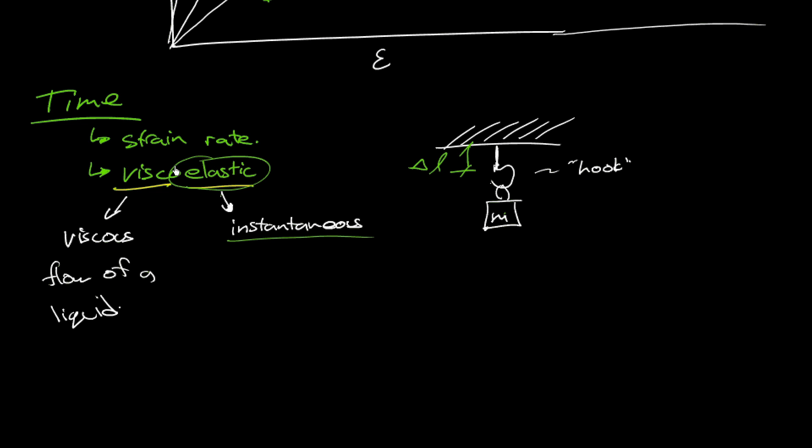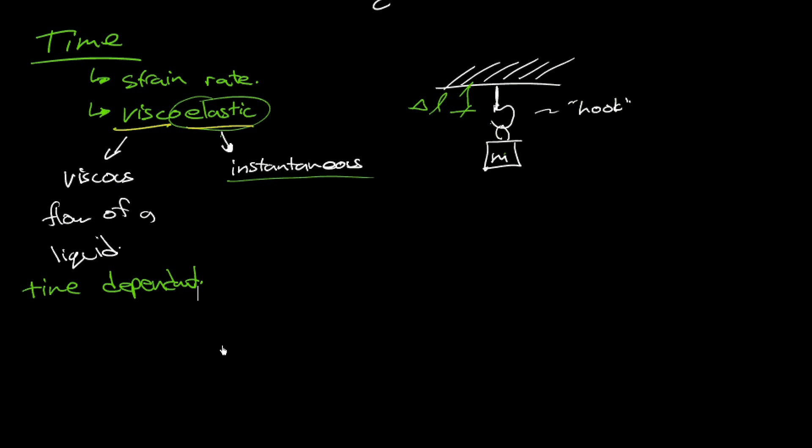And so elastic deformation is the instantaneous or time-independent component of deformation. So polymers have both a time-dependent and an instantaneous component of their plastic deformation, or their deformation. And we can further try to quantify that with a little sketch.